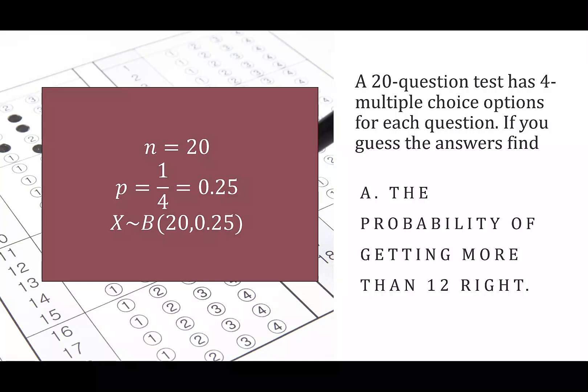When we think about getting more than 12 right, that does not include 12, so we're thinking 13, 14, 15, all the way up to 20 is what we're looking for the probability of.